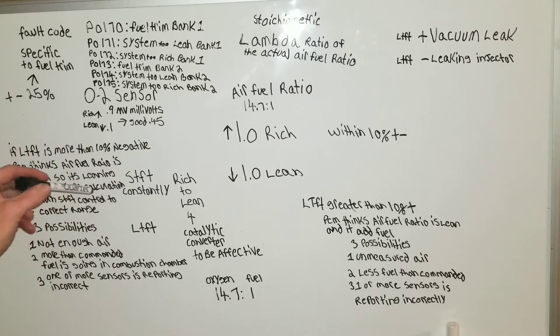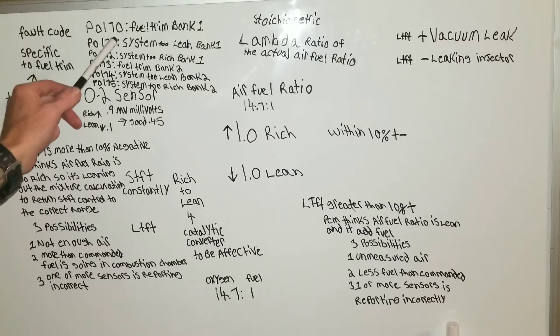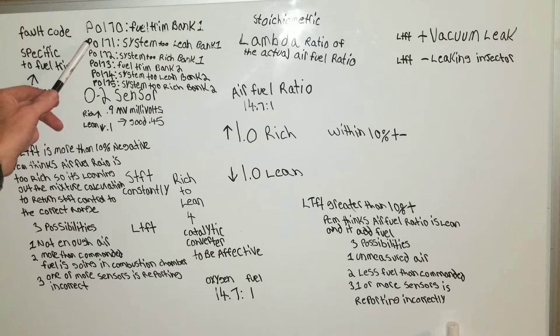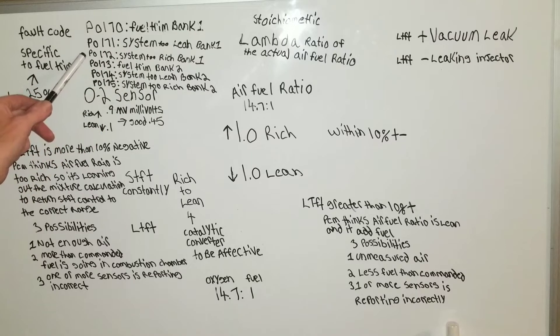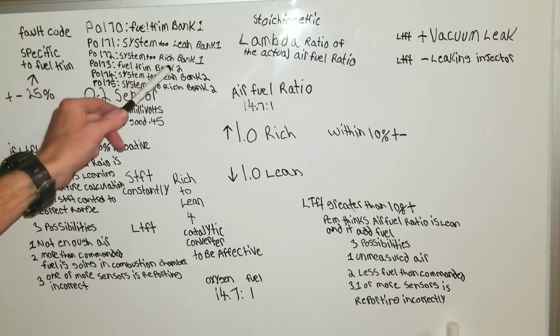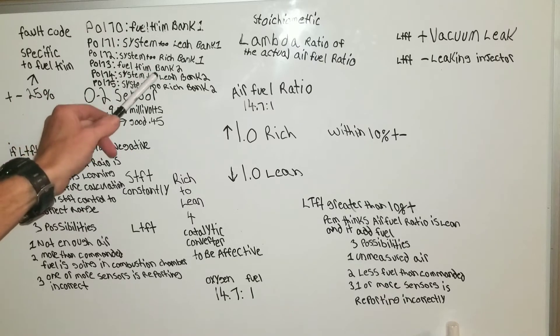So you can look up here, maybe you have one of these problems. Fault codes specific to fuel trim. First we have P0170 fuel trim bank 1. P0171 system 2 lean bank 1. P0172 system 2 rich bank 1. P0173 fuel trim bank 2.